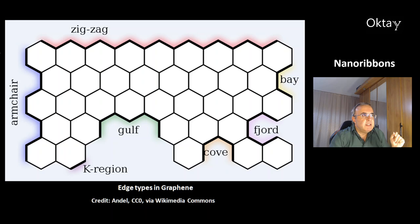There is an overview of edge types in graphene. At the top is the zigzag type, at the left the armchair type. This region is called the K-region, and there is also a gulf, cove, fjord, and bay.